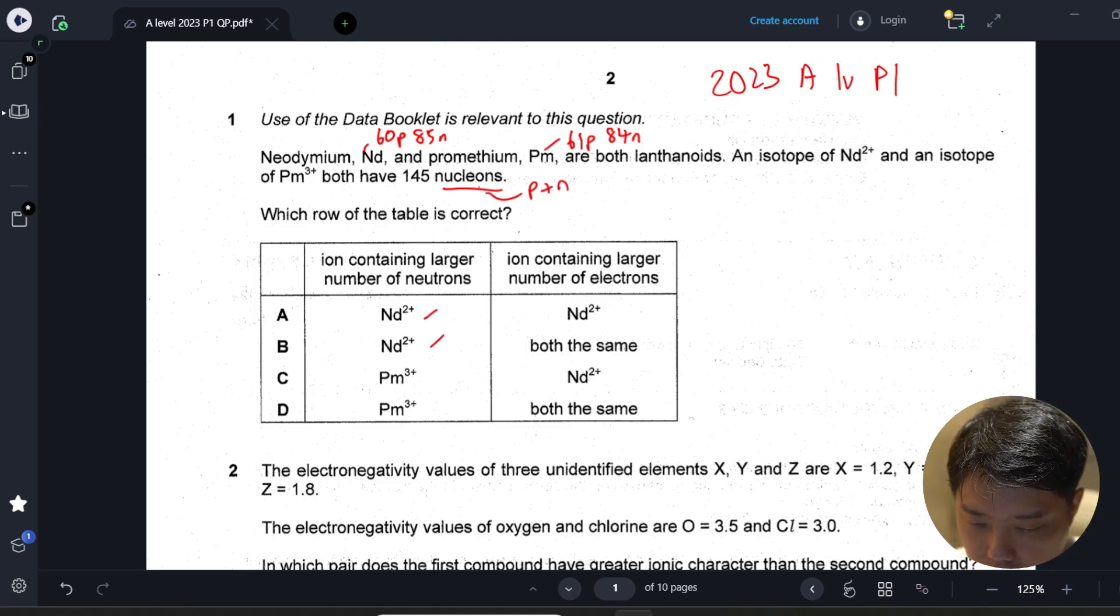Which is A and B. If you look at the right column, ion containing larger number of electrons - actually both should have the same number of electrons. Neodymium has 60 electrons.